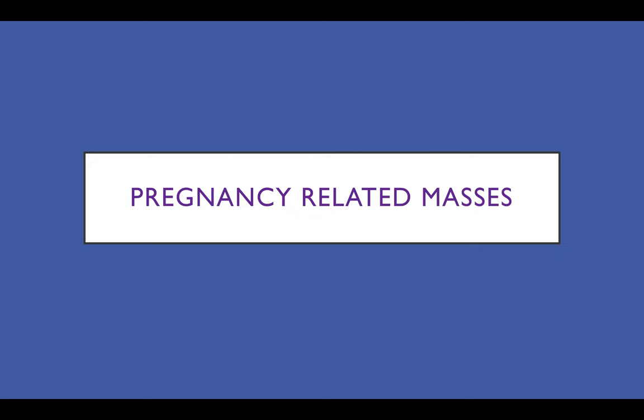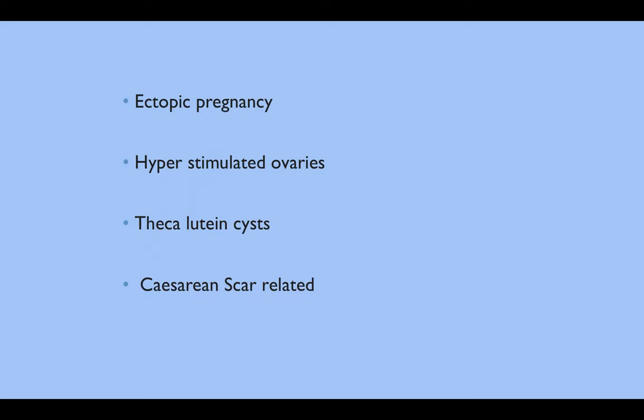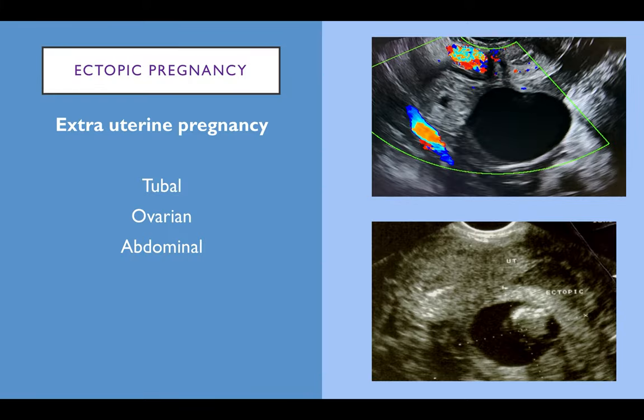Starting with pregnancy-related masses, I'll briefly go over ectopic pregnancy, hyperstimulated ovaries and theca lutein cysts, and some ectopic masses associated with a caesarean section scar. If we scan in early pregnancy, any adnexal mass that we see should be considered an ectopic pregnancy as the differential diagnosis. Ectopic pregnancies can be intrauterine or extrauterine — those presenting as an adnexal mass are either a tubal ectopic, an ovarian ectopic, or abdominal ectopic.